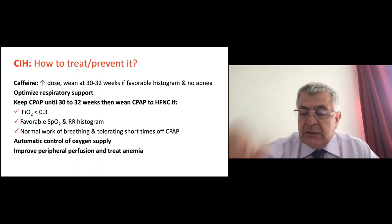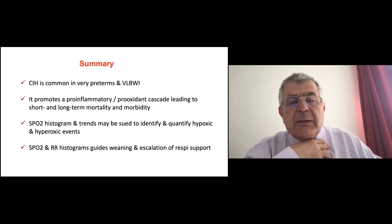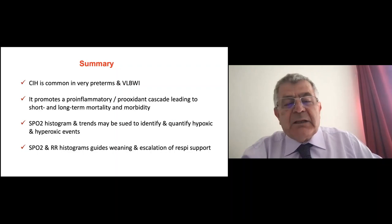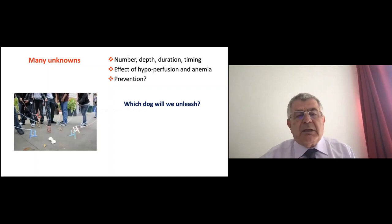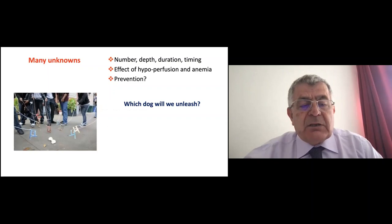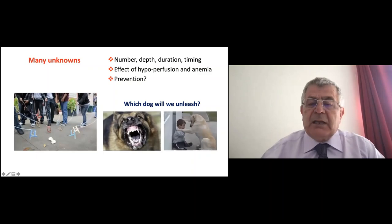In summary: chronic intermittent hypoxia is common in very preterm, very low birth weight infants. It promotes a pro-inflammatory, pro-oxidant cascade leading to short and long-term mortality and morbidity. Histograms and trends can be used to identify and quantify hypoxic and hyperoxic events, and to guide weaning and escalation of support. We must remember that we don't know enough about this subject and the evidence is limited. Like those people walking an invisible dog — you don't want to unleash an invisible dog without knowing what it is. That invisible dog could be like the ROP crisis of the past, which caused so much blindness. We need to understand what we're dealing with before we act.